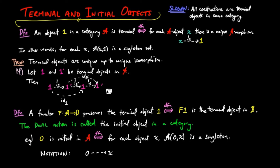And we use the same notation, shriek lower X, for the unique A morphism from the initial object to X, since context will usually tell us which morphism we mean.